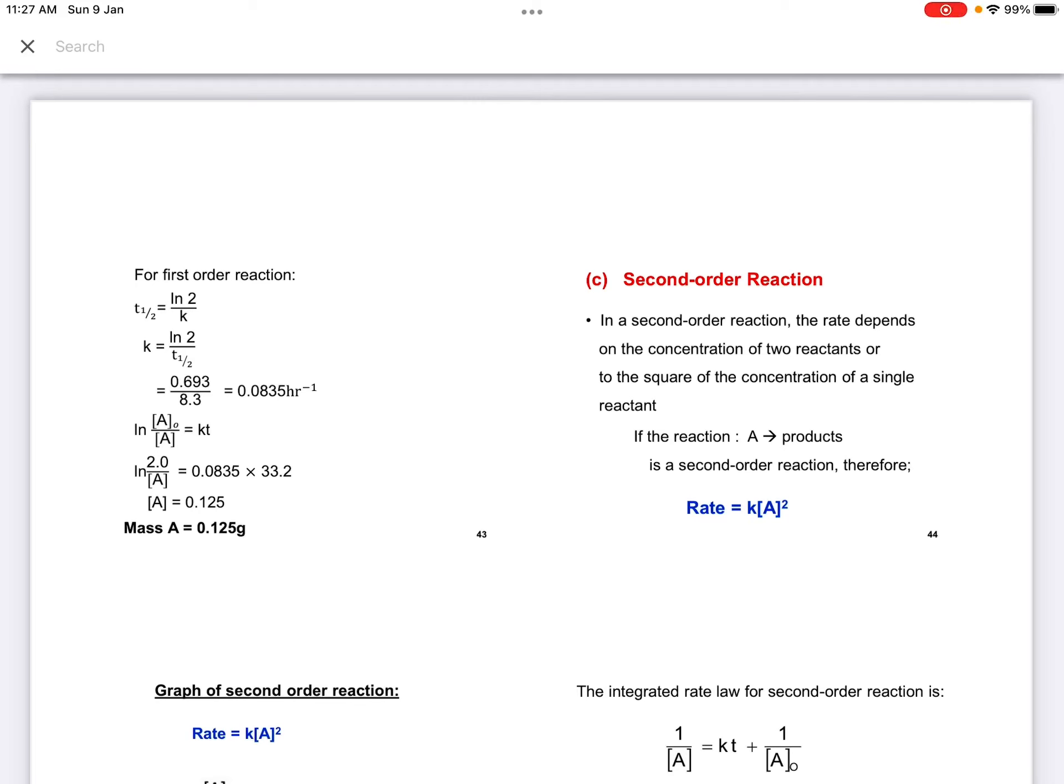We continue with a second-order reaction. In a second-order reaction, the rate depends on the concentration of two reactants or to the square of a single reactant. For example, if the reaction A produces products is a second-order reaction, therefore we write the rate law as rate equals to K A power 2.